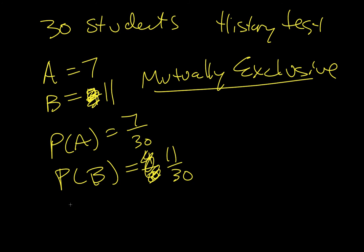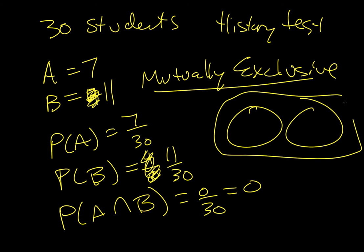And then we want to know the probability of A intersect B, which that's going to be 0 because they're mutually exclusive. Since they're mutually exclusive, remember the Venn diagram looks like this. They don't cross at all. So that would be for A and for B. And then we want to know the probability of A union B. Since they're mutually exclusive, we just add these together. So 7 plus 11 is going to be 18 over 30, and if we want to reduce that, we just get 3 fifths.